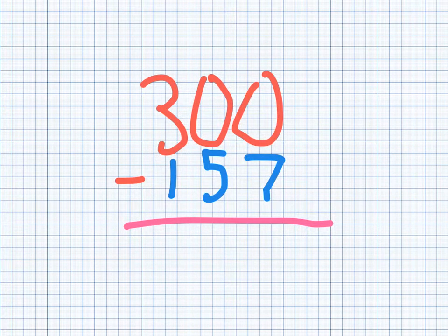First I go to my ones place. They have nothing, so I can't subtract that. Then I go to my neighbor's place, I can't subtract that. So then I go to the 100's place.